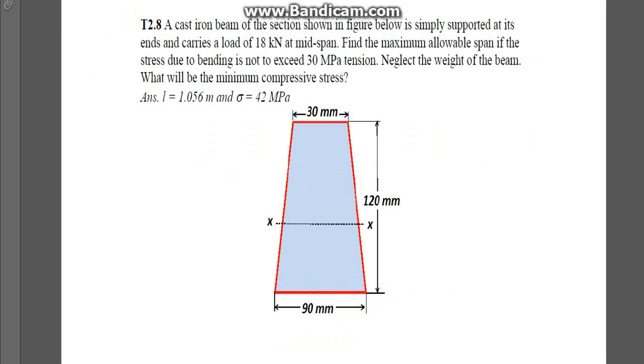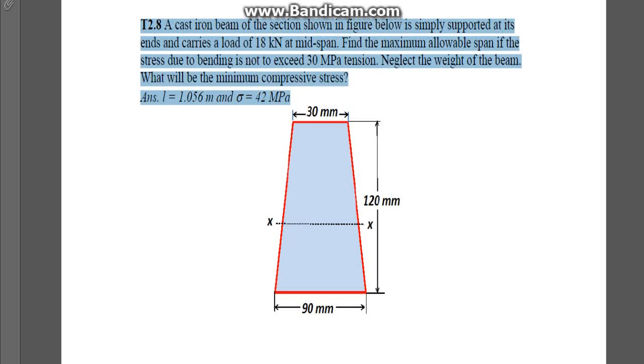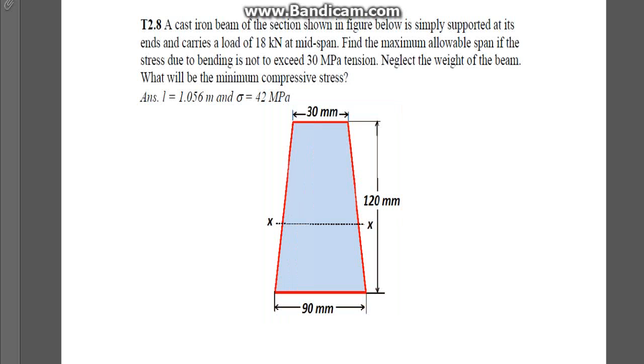The question we'll be looking at is the last one, and it is a bit of a wordy question without an actual diagram itself. It's just giving the side view of the beam right here. These dimensions are in millimeters as they are small in nature, as it is the side view of the beam. It's a cast-iron beam section as shown here, simply supported at the ends and carries a load of 18 kN at the mid-span. Find maximum allowable span if the stress due to bending is not to exceed 30 MPa in tension. Neglect the weight of the beam, and what will be the minimum compressive stress?